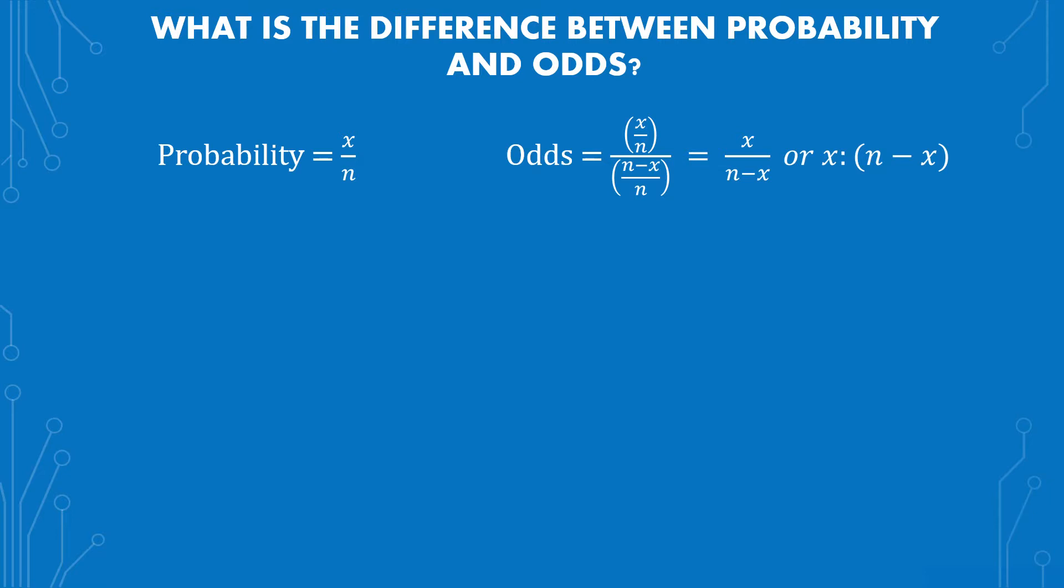Let's get into why you're probably on this video. Probability is x over n. It's pretty straightforward. Most people know how to do that. Odds can be understood as one probability over another. So you have x over n over n minus x over n. Or simplified, removing the 1 over n's from both the top and the bottom, getting you x over n minus x, or in ratio form, x to n minus x.